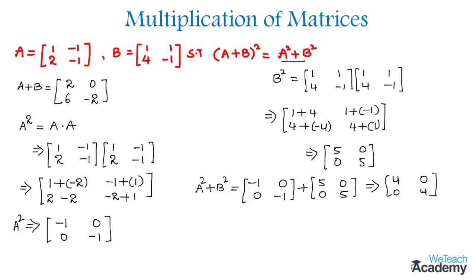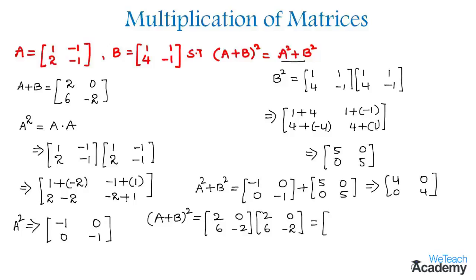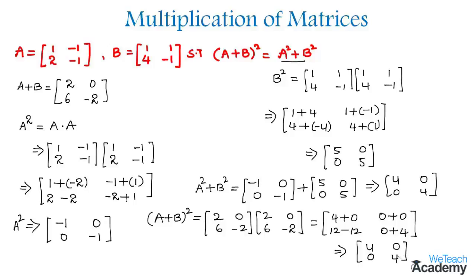Coming to the right-hand side, we need to find (A+B)², which is simply the matrix A+B multiplied by itself two times. Performing the multiplication: two into two is four plus zero into six is zero; two into zero plus zero into minus two is zero; six into two is twelve plus minus two into six is minus twelve giving zero; and minus two into minus two is plus four. So we get the matrix 4, 0, 0, 4 for (A+B)².